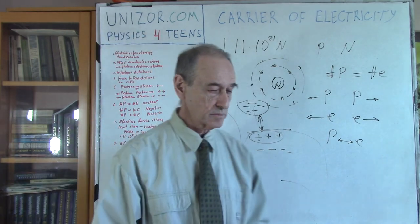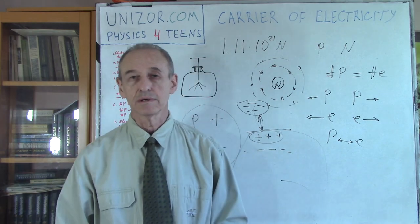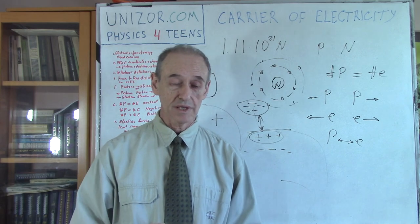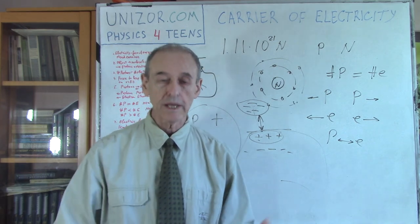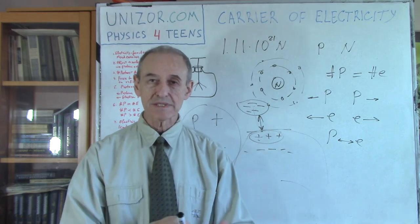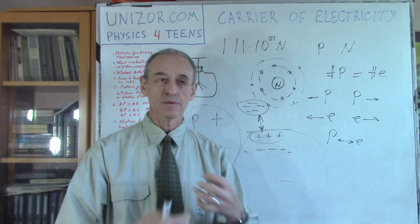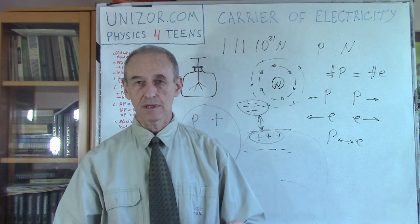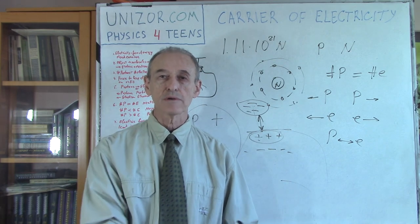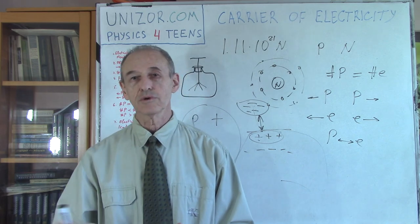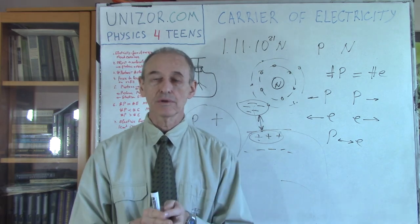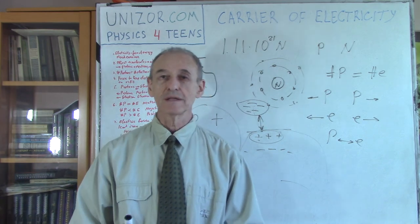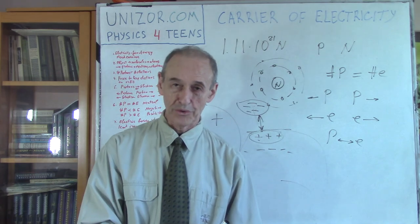Obviously, if somebody puts on a fur coat, you sometimes hear — and can even see — little sparkles. It's all electricity, only because something is rubbing against something else, and as a result you have a separation between protons and electrons: on one surface you have a deficiency of electrons, on another you have an excess, and when they are close enough, the sparkle between them actually moves electrons back where they belong. During the rubbing we are separating electrons from one object to another, but then when the sparkle comes, it goes the other way around and neutralizes the whole thing.